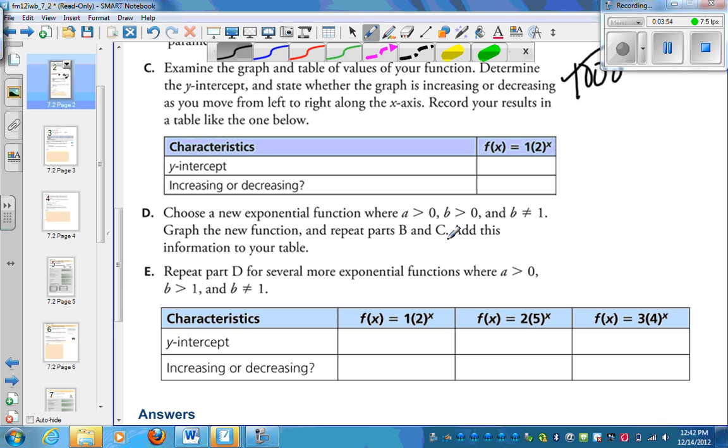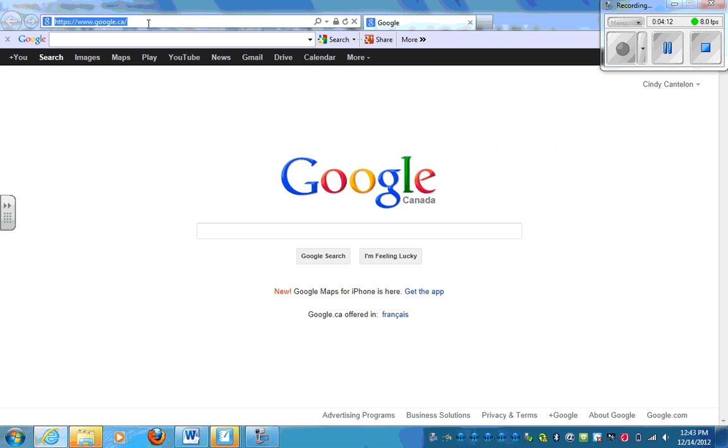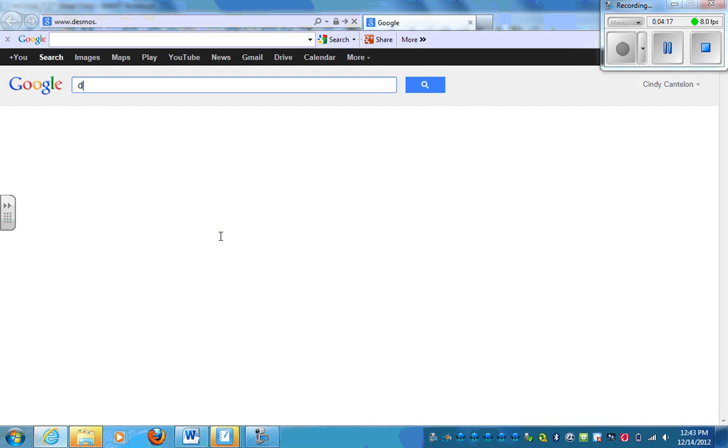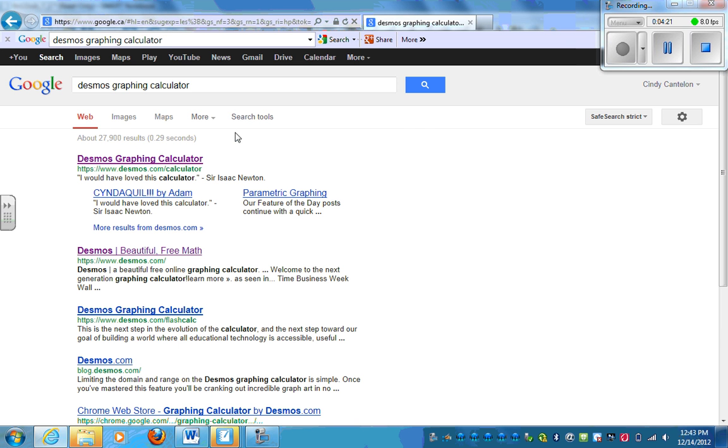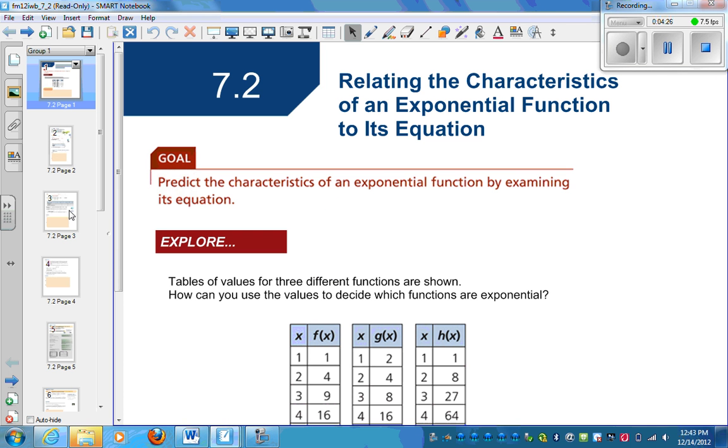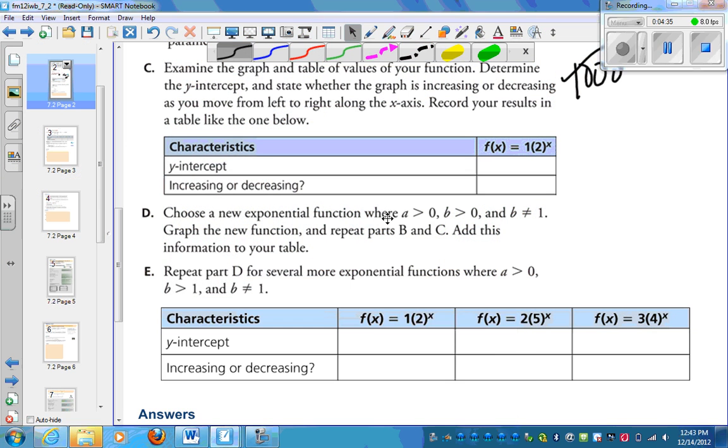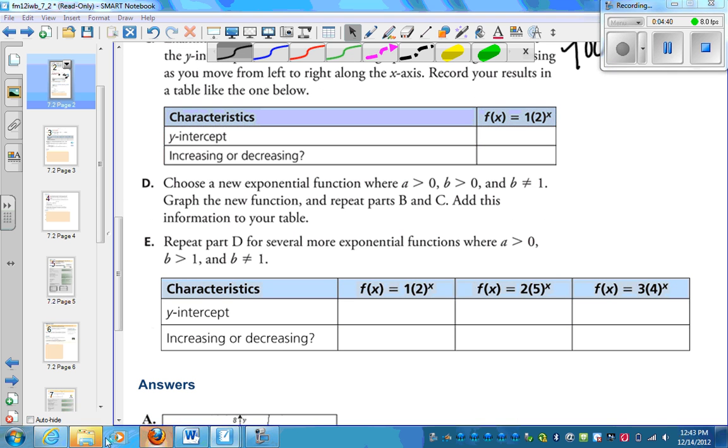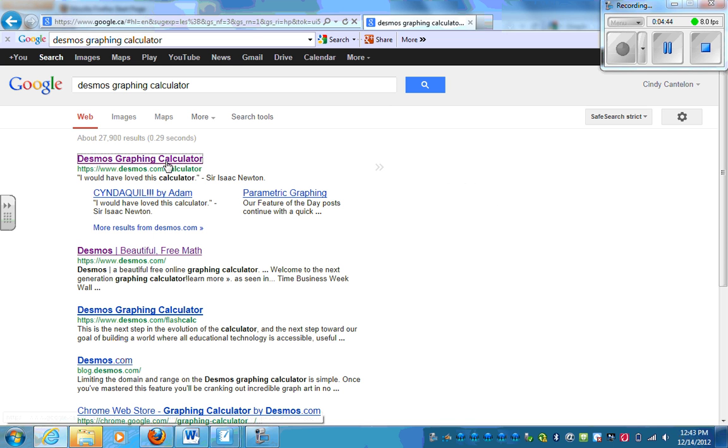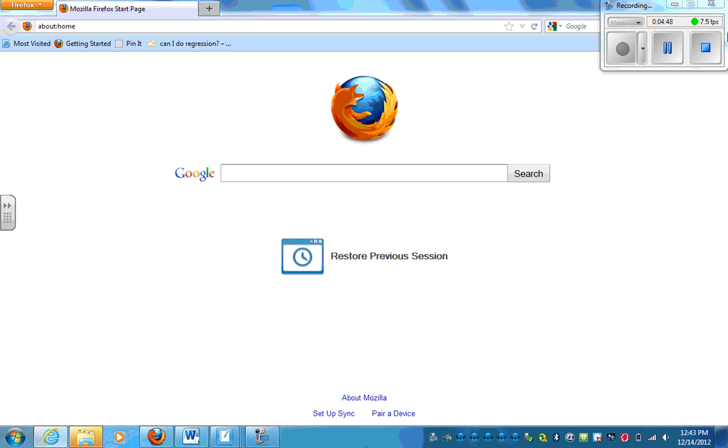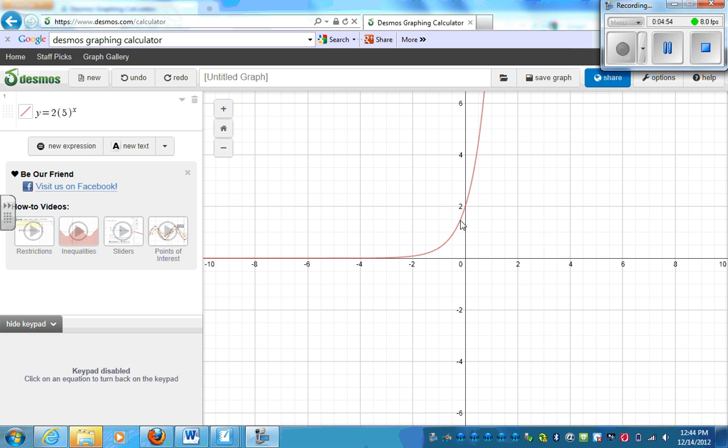Choose a new exponential function, graph it, and add to the table. So here's a couple things. F(x) equals 2 to the x, we saw that the y-intercept was 1 and it was increasing. Let's try f(x) equals 2 times 5 to the power of x. So if I wanted to graph that, I would just go to Desmos, or if you have your own graphing calculator you could do that. So we're graphing 2 times 5 to the power of x.